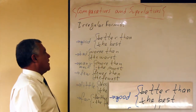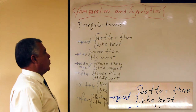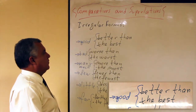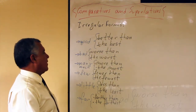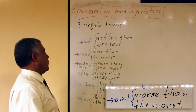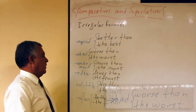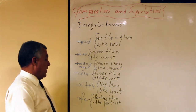Good! Comparative is better than, superlative is the best. Bad! Comparative form is worse than, the superlative is the worst. Many and much.